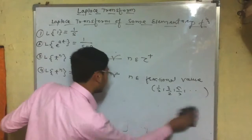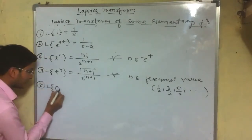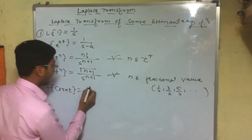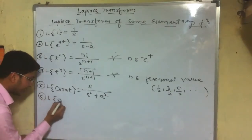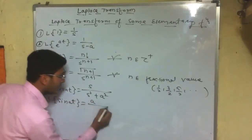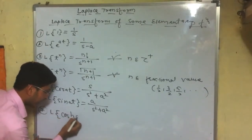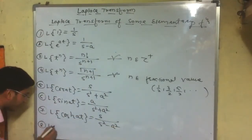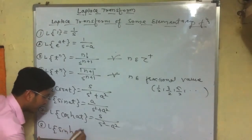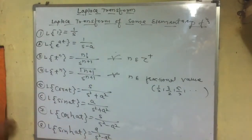Laplace of cos(at) is s divided by s² + a². Laplace of sin(at) is a divided by s² + a². Laplace of cosh(at) is s divided by s² − a². And Laplace of sinh(at) is a divided by s² − a². These are the eight basic elementary functions you should recall.